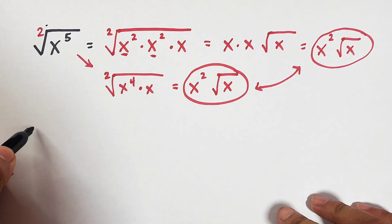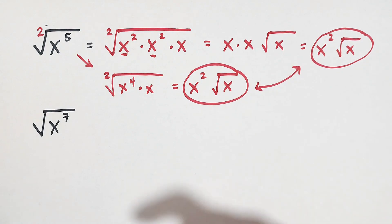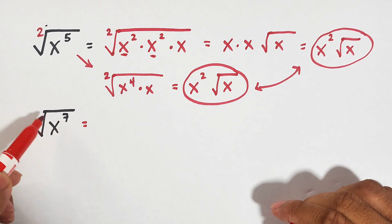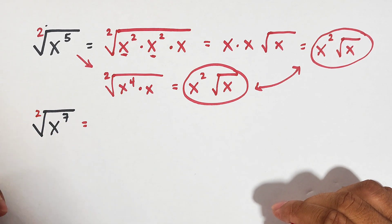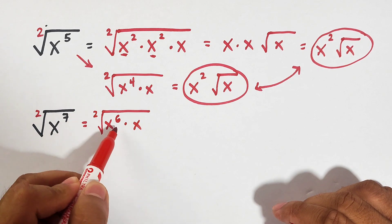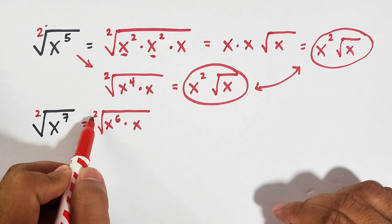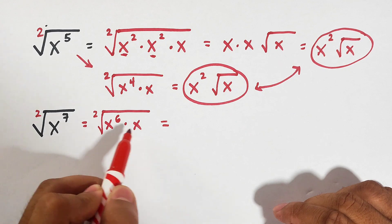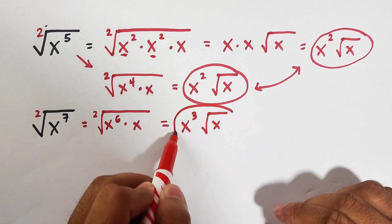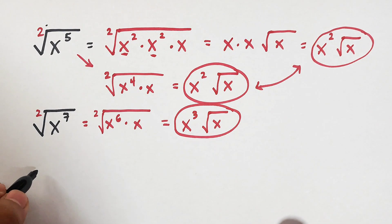Now let's move on to example number two: the square root of x raised to the seventh power. What you can do is select an exponent that is divisible by the index. So we can have x to the sixth power times x. To get the square root of x raised to the sixth, divide by the index: 6 divided by 2 is 3, therefore the square root of x raised to the sixth is x cubed. This one is not a perfect square, so we copy the square root of x. This is the answer for item number two.